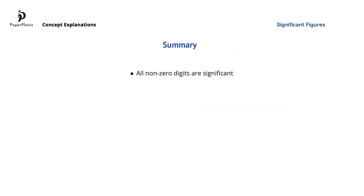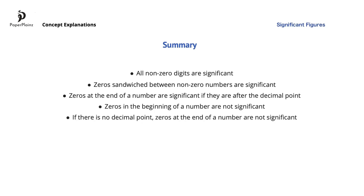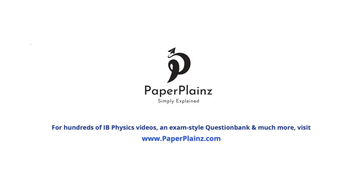Let's see what we have learned about identifying and rounding to significant figures. All nonzero digits are significant. Zeros that are sandwiched between nonzero numbers are significant. If zeros are at the end of a number and after a decimal point, they are significant. Zeros in the beginning of a number are not significant. And if there is no decimal point, zeros at the end of a number are not significant. This wraps up our discussion about significant figures. In the next video, we will learn about orders of magnitude.